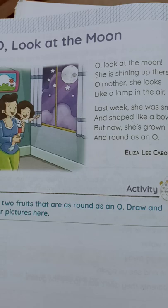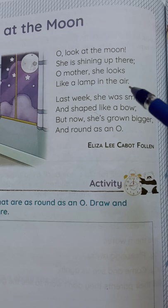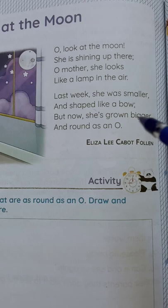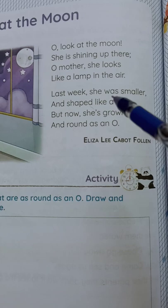Oh, look at the moon. Oh, look at the moon. She is shining up there. Oh, mother, she looks like a lamp in the air. Last week she was smaller and shaped like a bow, but now she has grown bigger and round as an O. Oh, look at the moon. She is shining up there. Oh, mother, she looks like a lamp in the air. Last week she was smaller and shaped like a bow, but now she has grown bigger and round as an O.